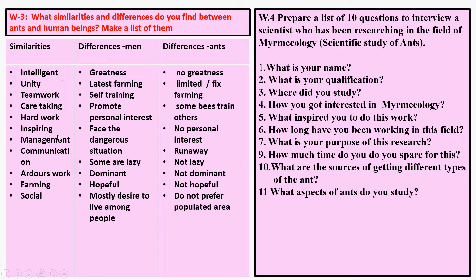After recalling, you can make a list this way. See the first column: similar. Intelligence — man is intelligent and the ant is also intelligent. Then unity — man lives in unity and ants also work in teamwork. Man's work is teamwork and the same thing is done by ants.